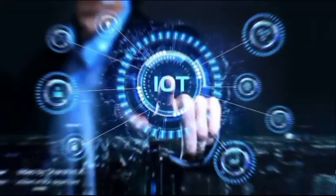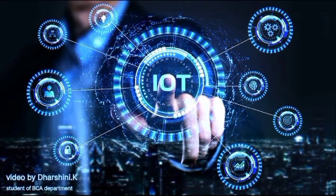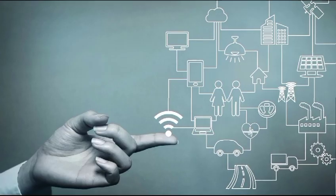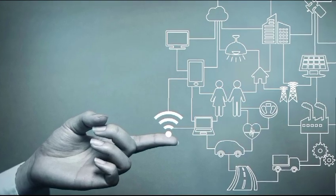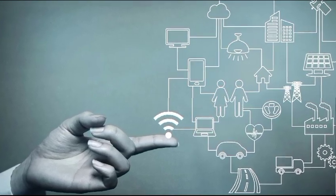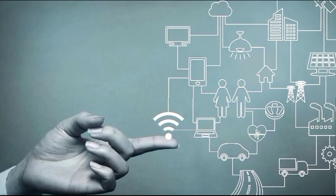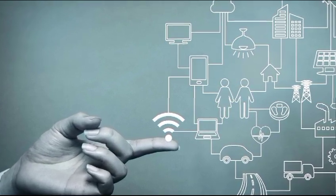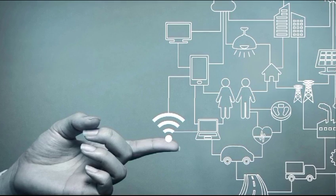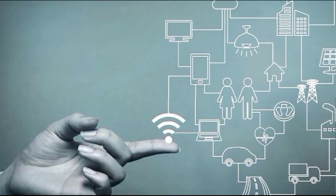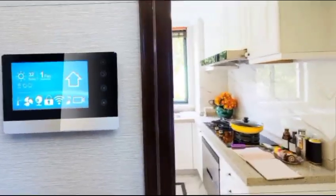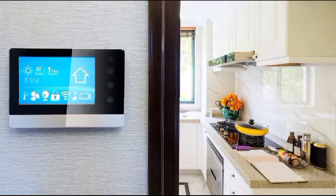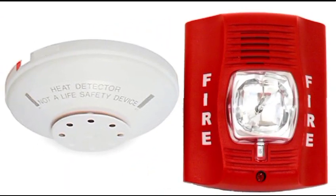Welcome to the Internet of Things, or IoT. IoT refers to the network of interconnected devices that can communicate and exchange data with each other. In your home, IoT enables smart devices like thermostats, lights, and security systems to work together intelligently.